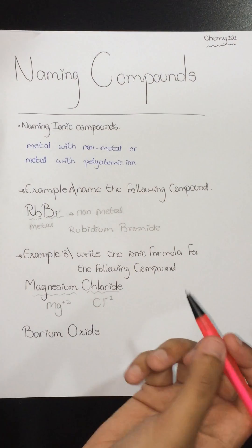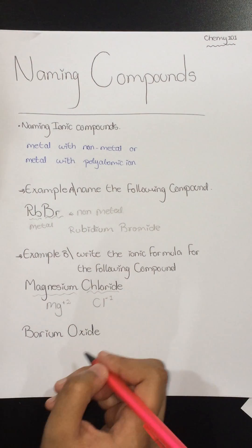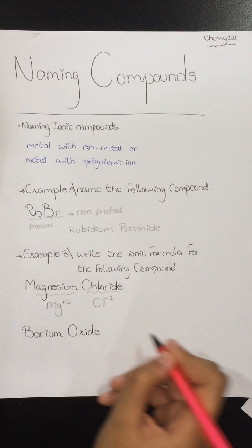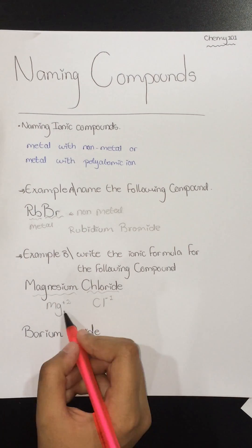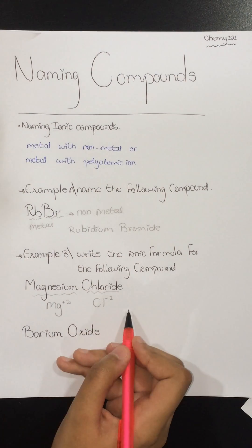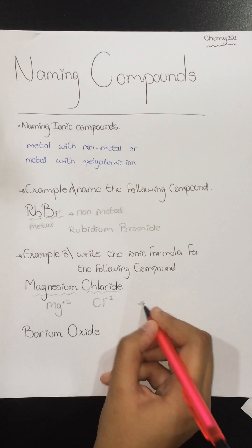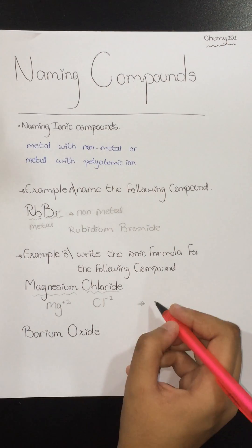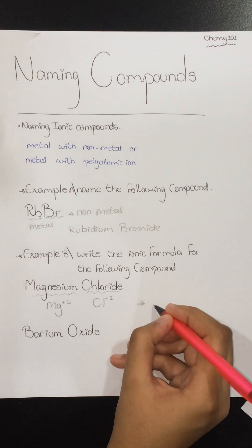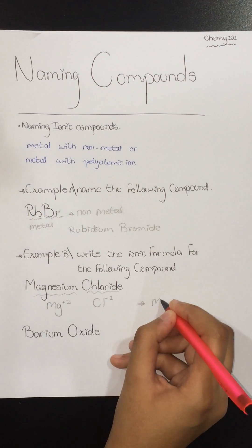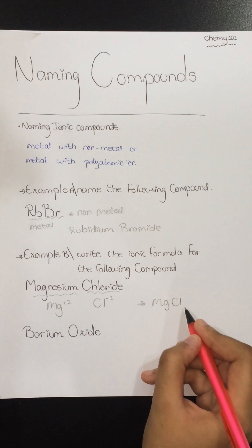Then we have to exchange the charge between the two elements. So Mg will take the minus 1, and Cl will take the positive 2. So this is our final ionic formula: Mg₁ and then Cl₂.